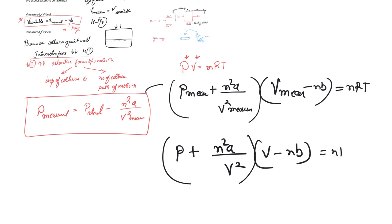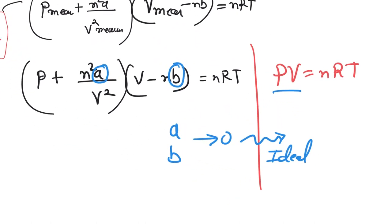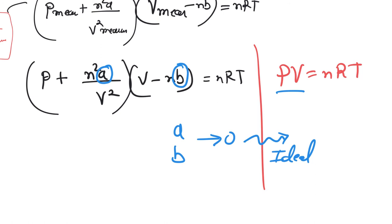You must understand here that this is the same equation that would convert to PV equals nRT. Remember, the ideal equation was PV equals nRT. Here a and b are experimentally determined factors. Now a and b approach to zero when we are talking about the ideal situation. Remember, the values of a and b you always get experimentally. So let us try to use that and solve a question.